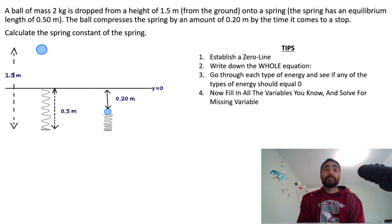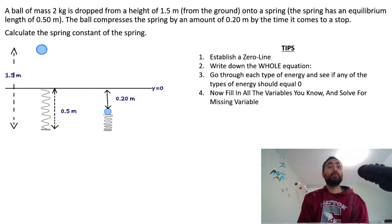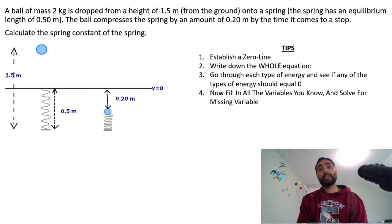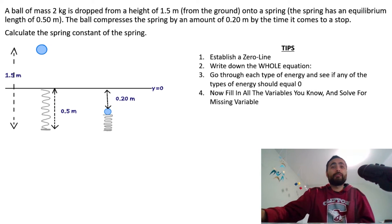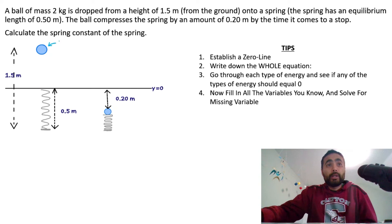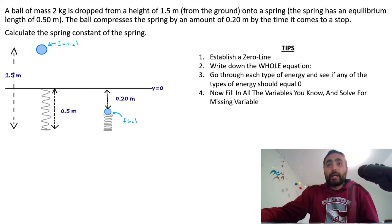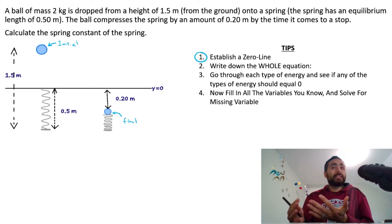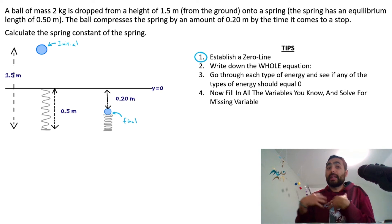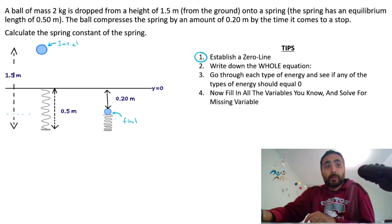This next one is the hardest because it has all the other types of energy. A ball of mass two kilograms is dropped from a height of 1.5 meters from the ground onto a spring. The spring has an equilibrium length of 0.5 meters. The ball compresses the spring by 0.2 meters by the time it comes to a stop. Calculate the spring constant. The initial point is when the ball is dropped, and the final point is when the spring is fully compressed. Establish the zero line at the lowest point the object is going to be.